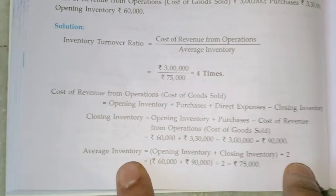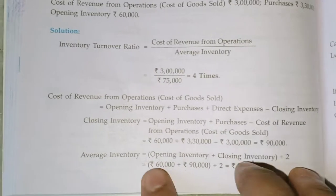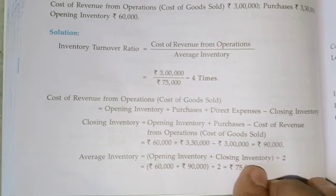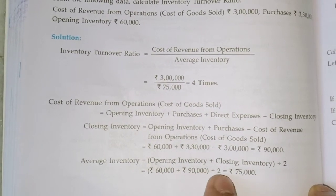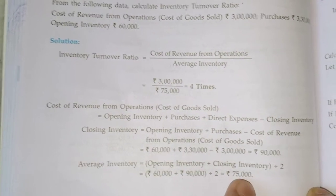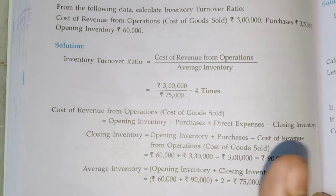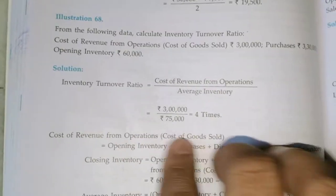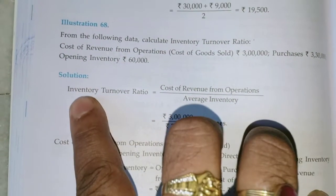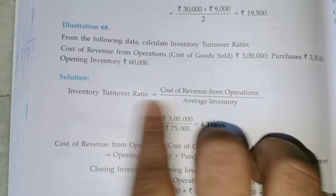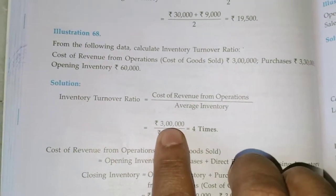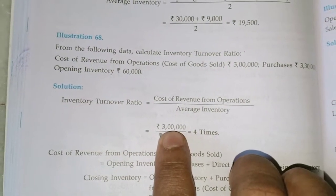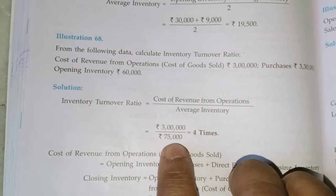Then, Average Inventory = (Opening + Closing) / 2 = (60,000 + 90,000) / 2 = 75,000. Then, Inventory Turnover Ratio = Cost of Revenue / Average Inventory = 3,00,000 / 75,000.